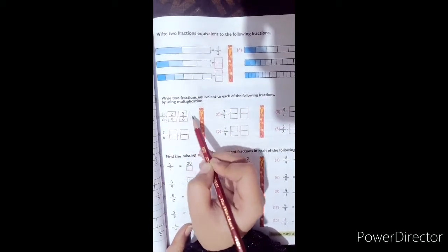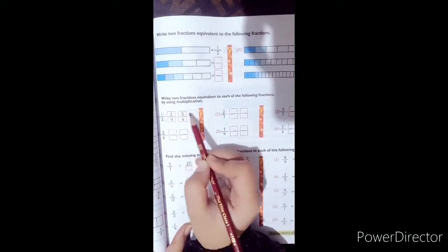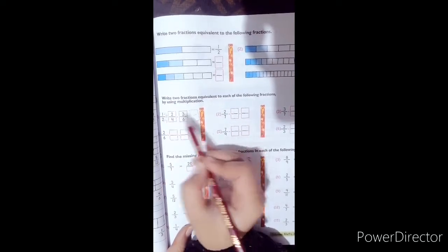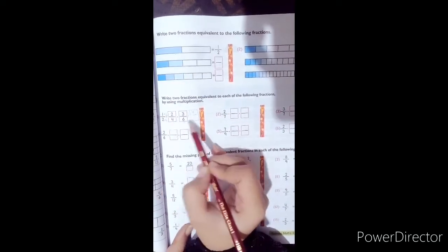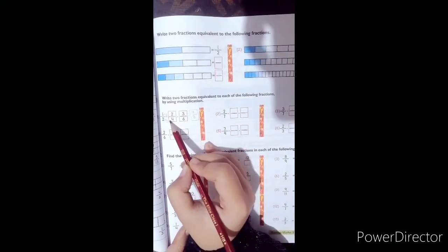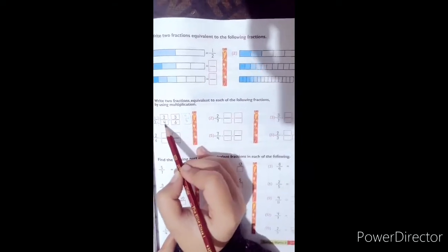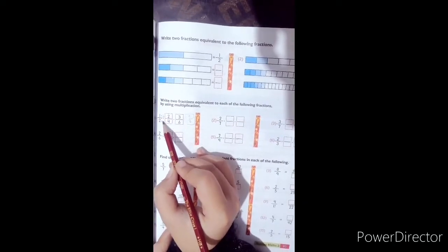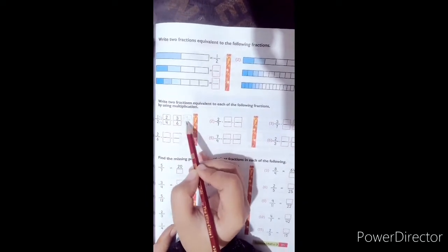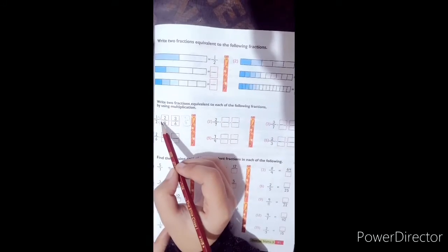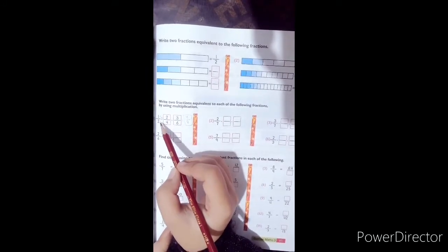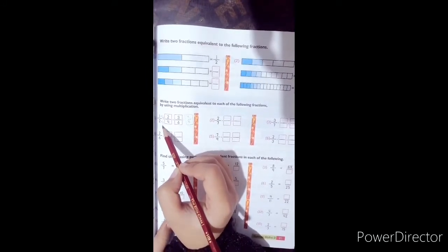If we multiply by 4, then what will happen? 1 times 4 is 4 and 2 times 4 is 8. This is equivalent fraction. We multiply equally numerator and denominator.